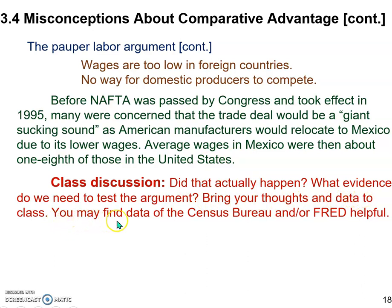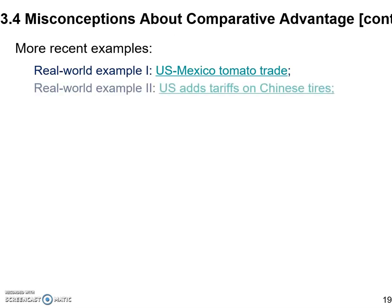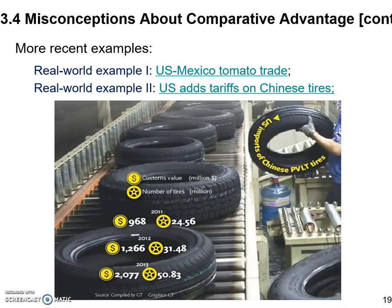I would point you to the Census Bureau or the FRED database — I believe you can find relevant data there to test this argument. Later in our class discussion, I will bring two more examples related to this second myth: the U.S.-Mexico trade for tomatoes, and the U.S.-China trade for tires. We will find more interesting discussions on those later.